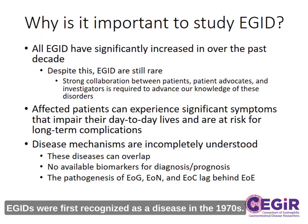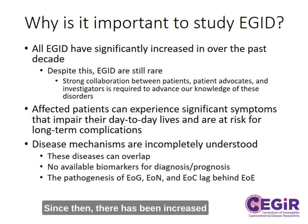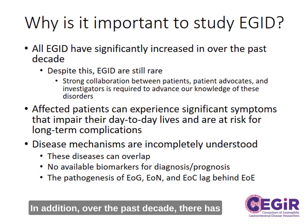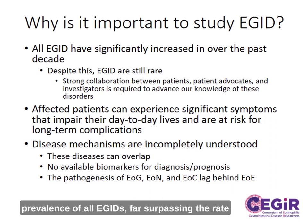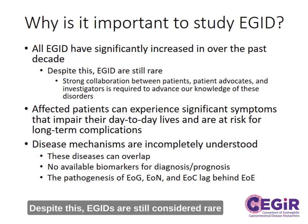EGIDs were first recognized as a disease in the 1970s. Since then, there has been increased recognition of these disorders across medicine. Over the past decade, there has been a significant increase in the incidence and prevalence of all EGIDs, far surpassing the rate expected just from increased recognition. Despite this, EGIDs are still considered rare diseases, which can make research difficult.